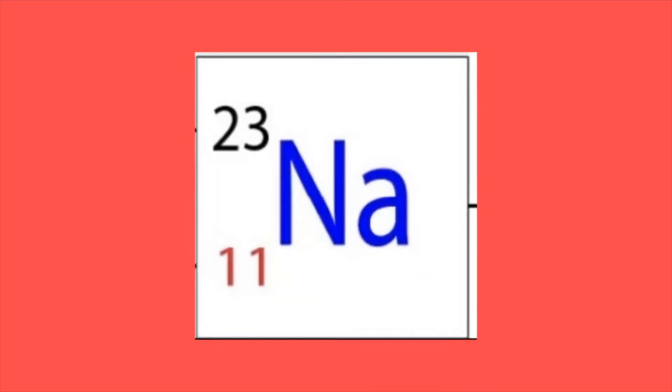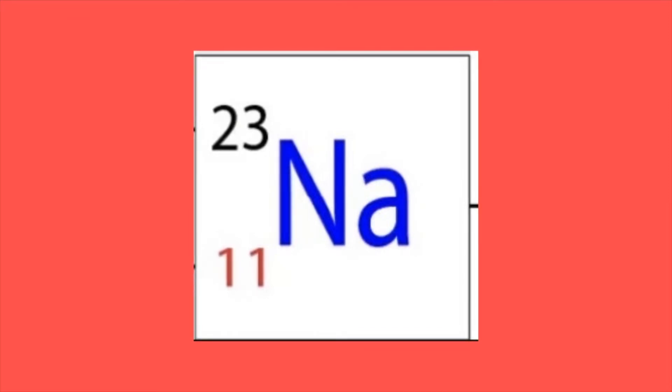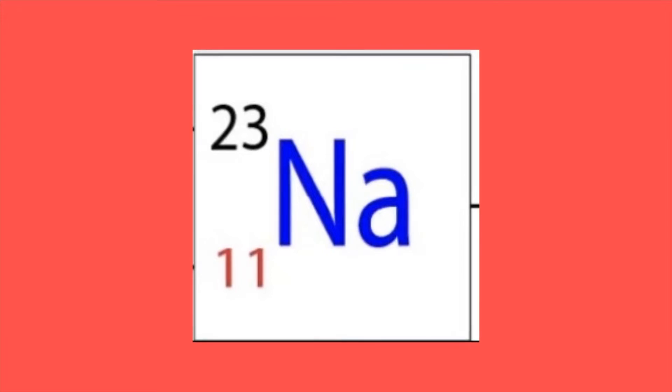From the periodic table, you will find out that the element is sodium, whose symbol is Na. Its mass number 23 is written at the top and atomic number 11 is written at the bottom.